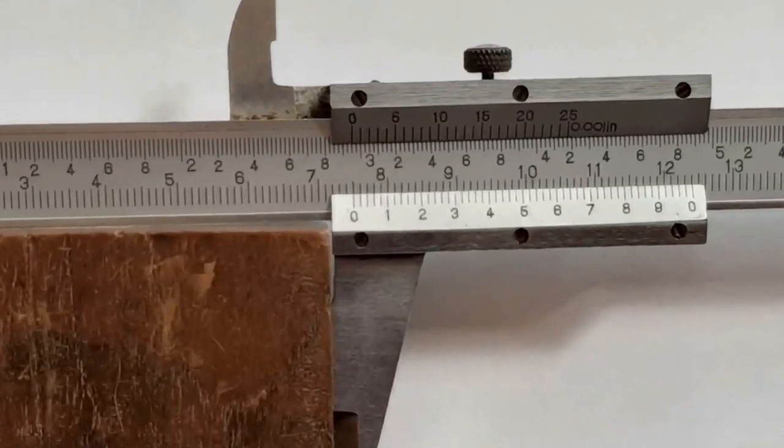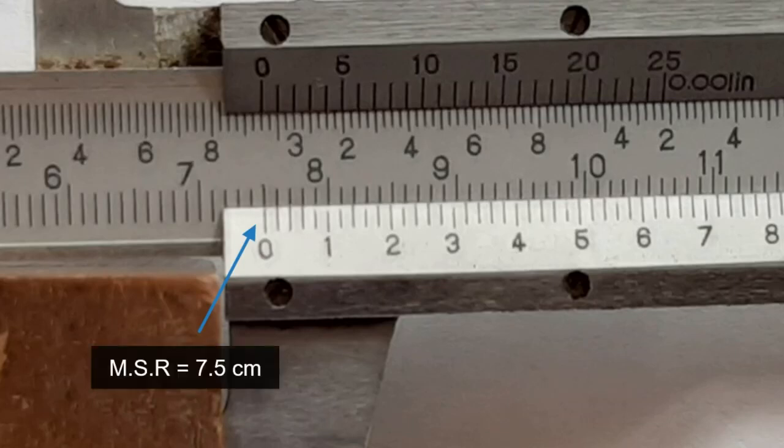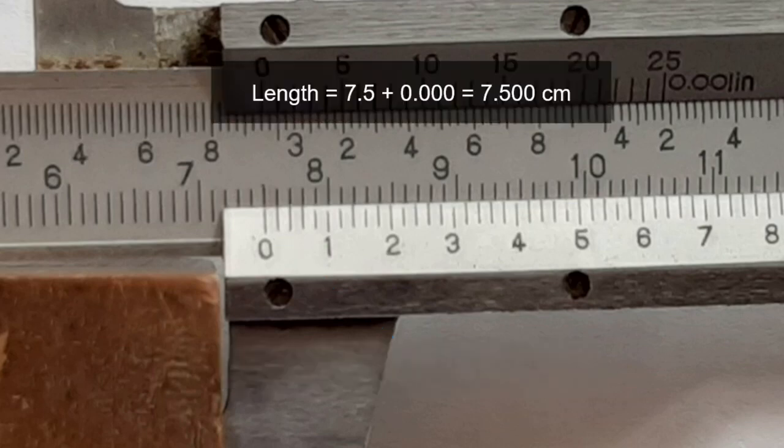Now, let us go through another example. In this case, if you see, the zero of the vernier scale exactly matches with the 7.5 cm of the main scale. So, main scale reading is 7.5 cm and vernier scale reading is zero. So, the final reading will be 7.5 plus zero, that is equal to 7.500 cm.